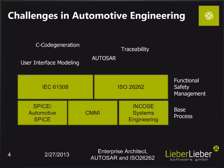In automotive engineering, you have many challenges for the development. At the base, you have different process models and process norms you have to fulfill, like SPICE, or Automotive SPICE, or CMMI, or perhaps the INCOSE Systems Engineering process. On top of these base processes, you have further norms for functional safety management, like the IEC 61508 or the ISO 26262, containing special requirements for functional safety management. And beside these base processes and functional safety management norms, we have further challenges in the development area, like development with the AUTOSAR standard in software engineering, or C code generation.